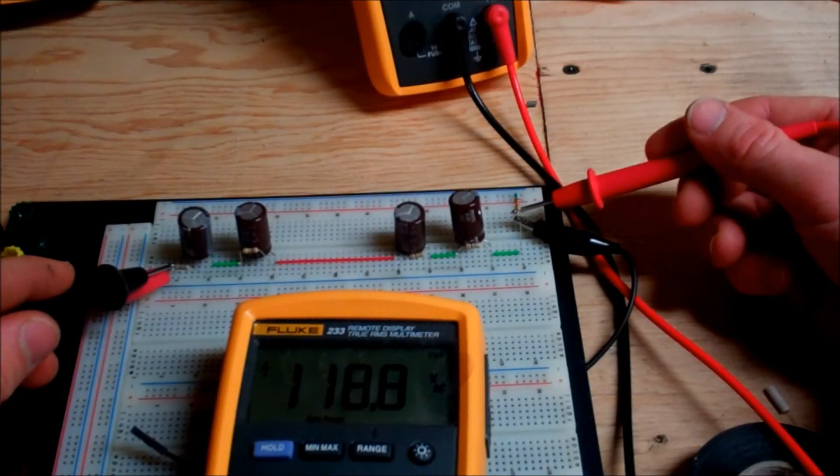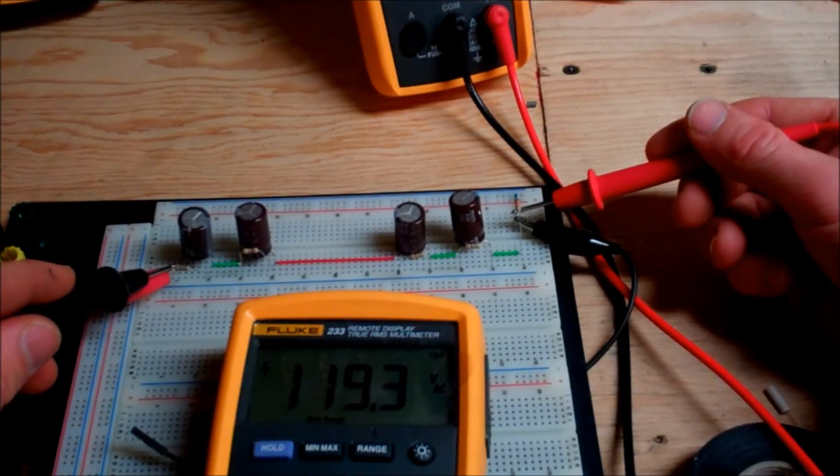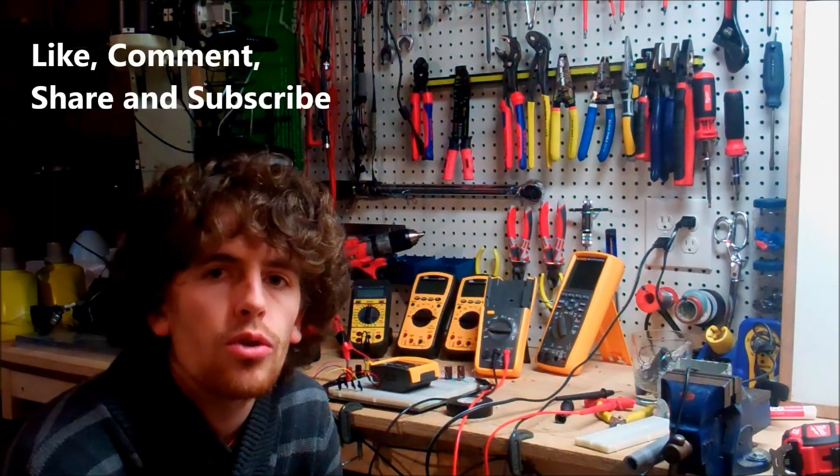So as you can see, we're applying 120 volts to these electrolytic capacitors and they're holding up. And that's how simple it is to make a non-polarized electrolytic capacitor.